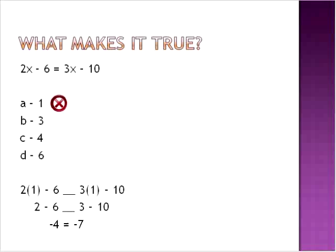The next example which we'll be using a value of 3. We take the original equation here. We substitute the value of 3 everywhere that we see an x. 2 times 3 is 6, and 3 times 3 is 9. 6 minus 6 is 0. 9 minus 10 is negative 1. We've got a negative number, but 0 is not equal to negative 1. So therefore, we know the value is not 3.